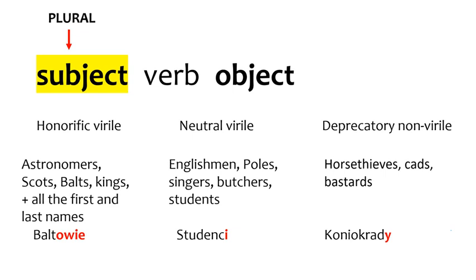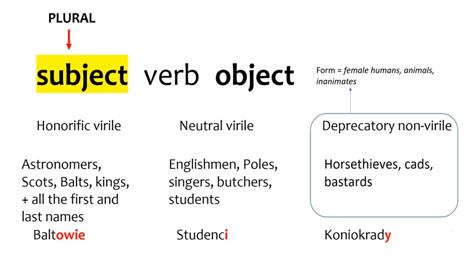Horse thieves, cads, and bastards share something in common with kings, students, and butchers — namely, they all include human males. Yet by sharing the endings used for female humans, animals, and inanimate objects, they encode a derogatory sense. In fact, certain words may appear with all three endings. Take professors: if you wish to convey deference, you'll use the honorific virile, profesorowie; if your sentiment is neutral, you may choose profesorzy; and if you're upset with your professor, you may resort to the deprecatory form, profesory.